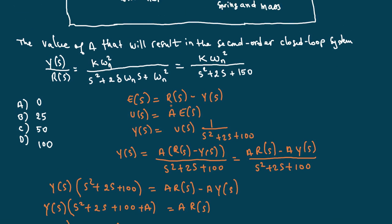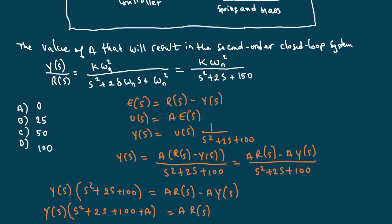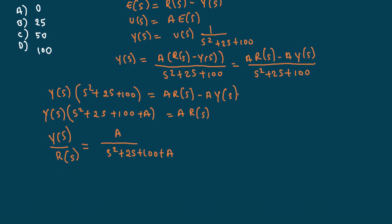Now going back to what was given to us, the value of A that would correspond to this equation right here, we can equate them together. This technically is supposed to equal what was given, which is K*ωₙ² over S² + 2S + 150. This whole thing at the bottom should equal to this whole thing, and then of course A should equal to this from the top. A is equal to K*ωₙ², but at the same time, S² + 2S + 100 + A is also equal to S² + 2S + 150 because the two equations are equal.